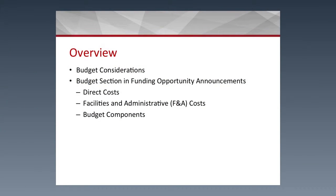The overview will consist of budget considerations, the budget section and FOAs — which are the Funding Opportunity Announcements — the direct costs, the F&A costs which are the facility and administrative costs, and the budget components aspects.